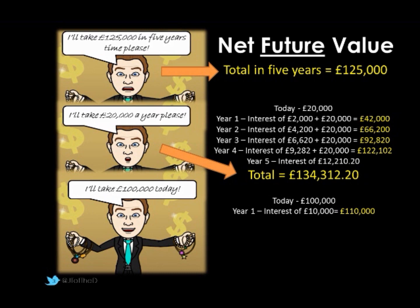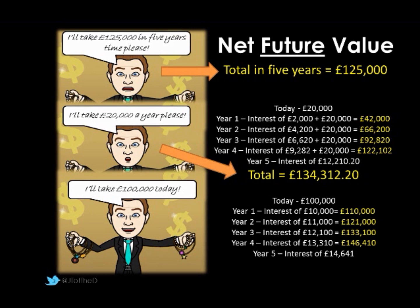Our interest in the first year is £10,000 — that's 10% of £100,000. So at the end of year one we'd have £110,000. At the end of year two, again compound interest, we'd have 10% of the £110,000, which is £11,000, giving us £121,000. By the time we get to year five, at the end of year four we had £146,410. So 10% of that is £14,641, and our total at the end of five years is £161,051 — significantly higher than both of the other options.